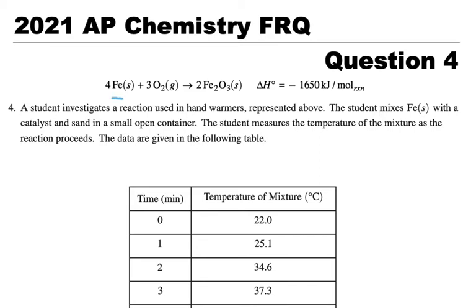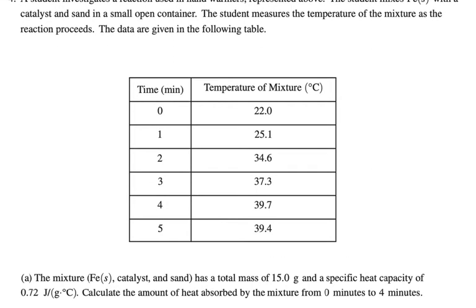Here we have 4Fe(s) + 3O2(g) → 2Fe2O3(s) with ΔH = -1650 kJ/mol. The negative delta H means heat is given off. The data shows that at 0, 1, 2, 3, 4, and 5 minutes, the temperature goes from 22.0°C up to 39.4°C.